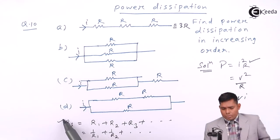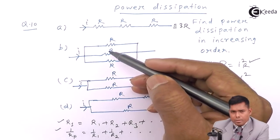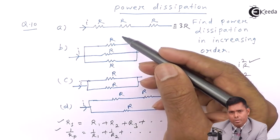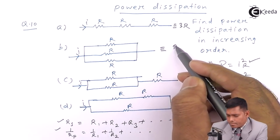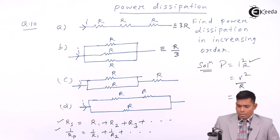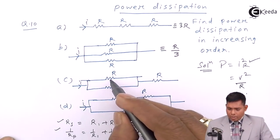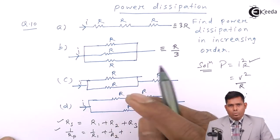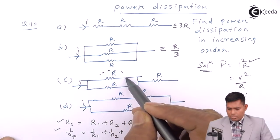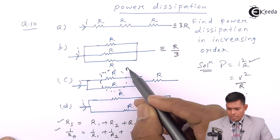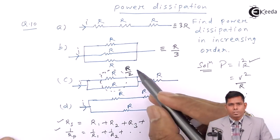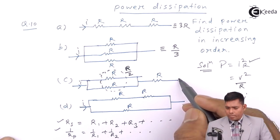For the parallel combination: 1/R_parallel = 1/R + 1/R + 1/R = 3/R, then take the reciprocal, so R_parallel = R/3. For the third combination, two resistors are in parallel giving R/2, and that is in series with the third, so R/2 + R = 3R/2.